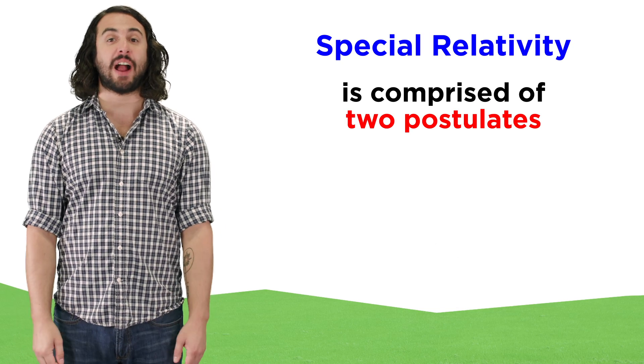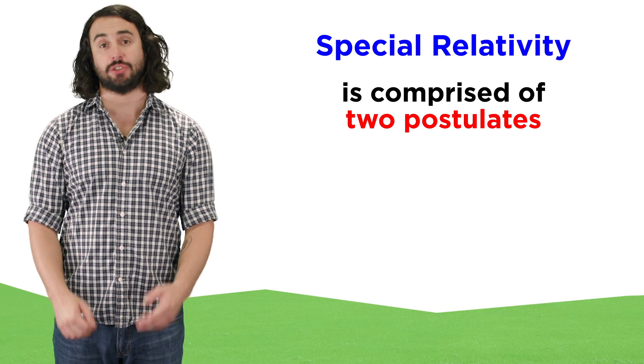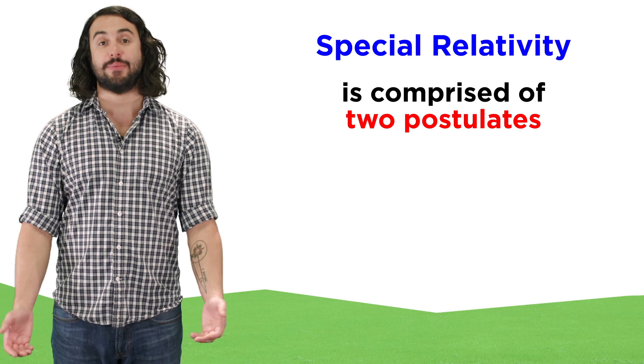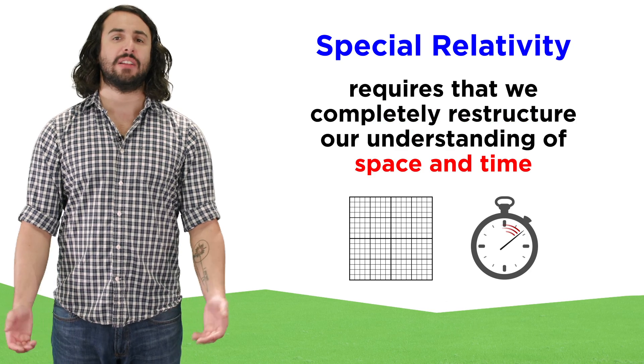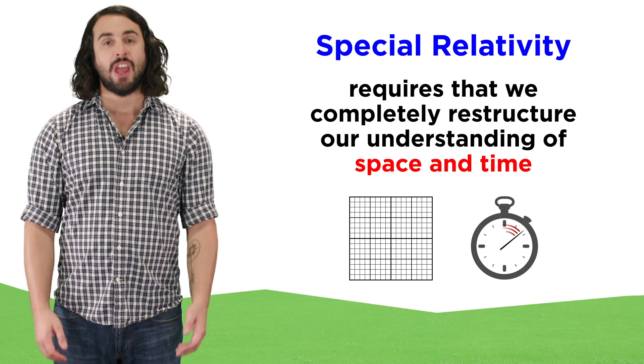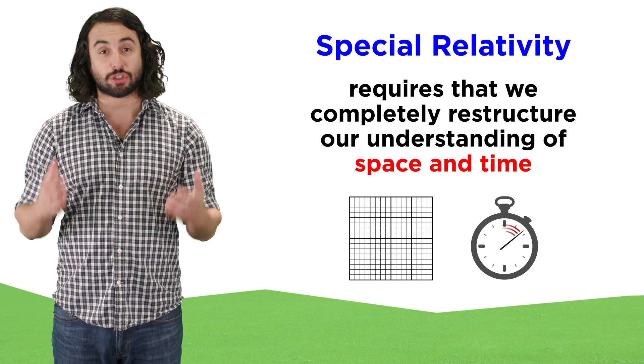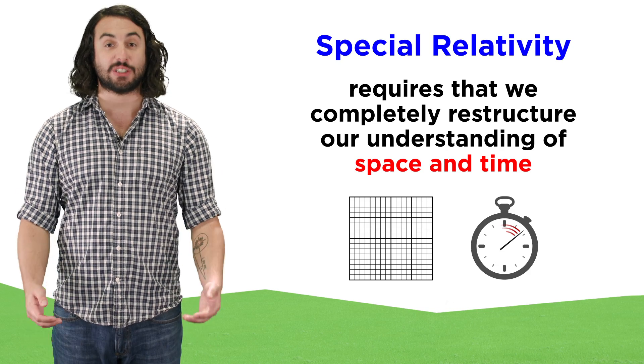Special relativity is comprised of just two postulates, which at first glance seem very simple, but we quickly realize that in order for them to be true, we have to completely restructure our understanding of space and time.